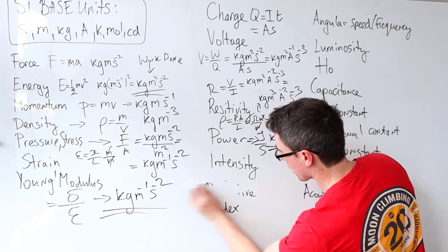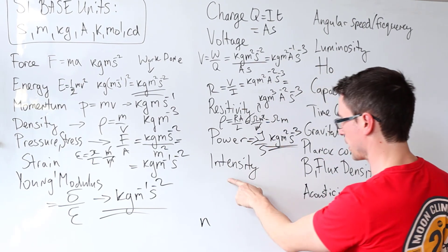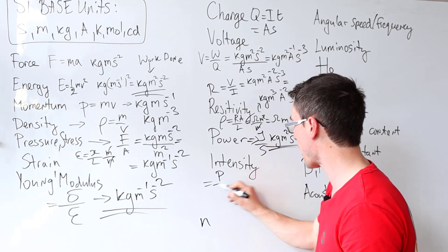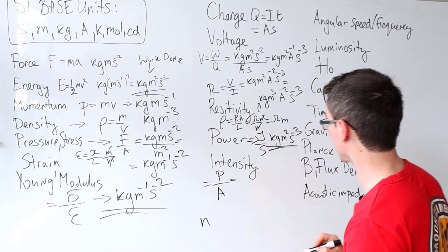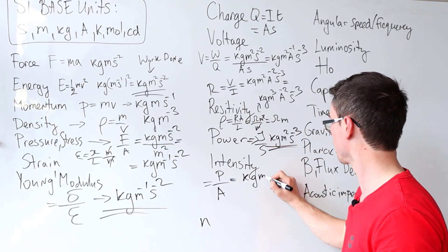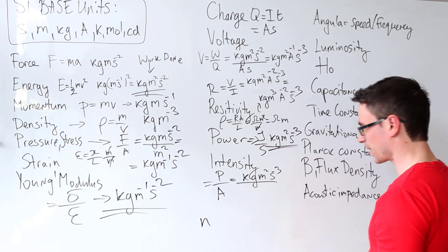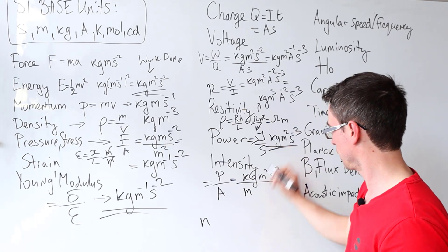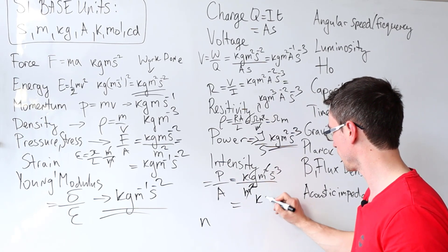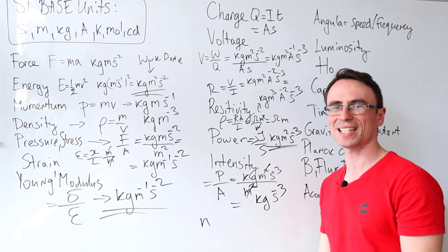Intensity is just power divided by cross-sectional area. Power is kg m² s⁻³. Area here is just meters squared — those cancel — leaving kg s to the power of minus three.